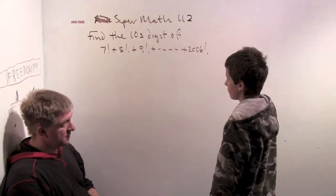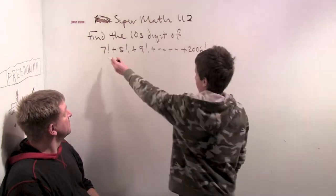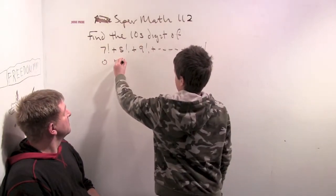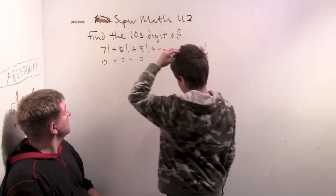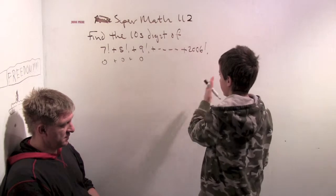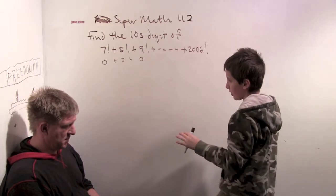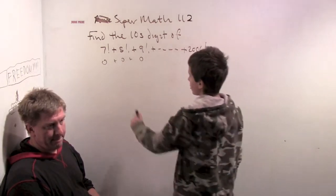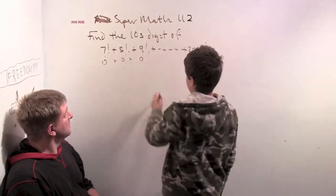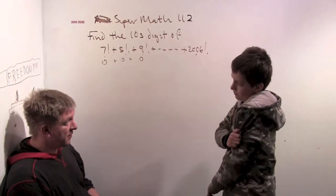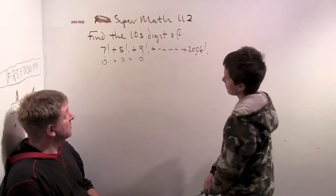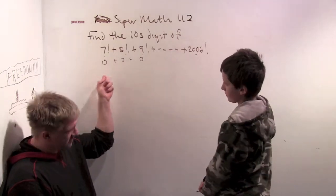Well, actually that's really easy because the ones digit for every one of these is zero. How come the ones digit is zero? Well, because seven factorial is 7 times 6 times 5 times 4 times 3 times 2 times 1, and you have a 2 and a 5 in every one of these. So it's all zero. You have a 2 and a 5 in all of them, so there's 2 times 5.